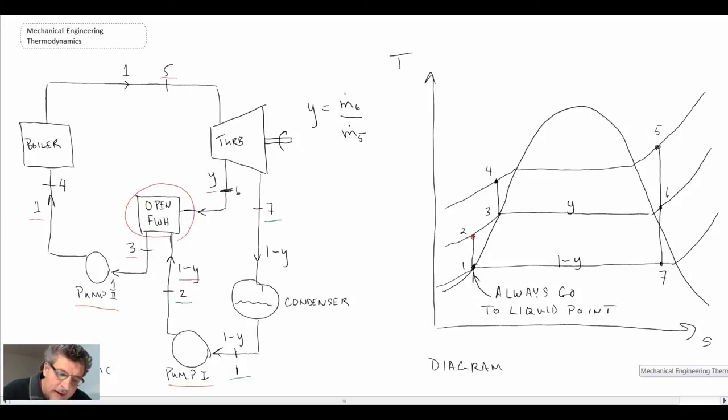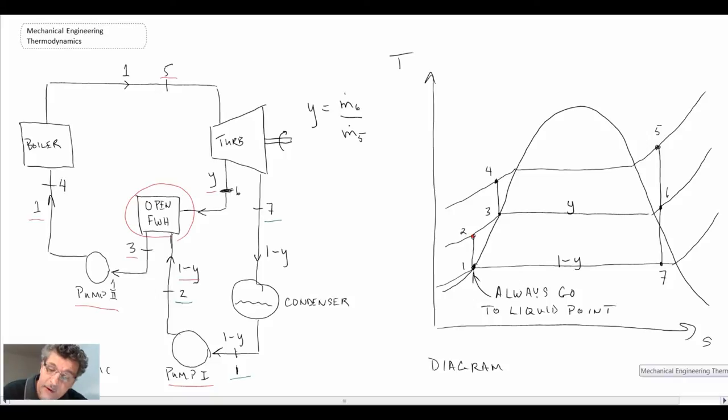And that is equal to the mass flow rate at 5 minus the mass flow rate at 6. So basically, it's saying that it's what is coming out of the boiler, going into the turbine, taking off the fluid stream that we're stripping off, and they would be equal to one another. So we can write m5, which is the flow going into the boiler, minus m6 is what we're stripping off. So those would be equal.